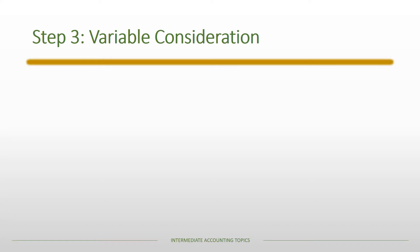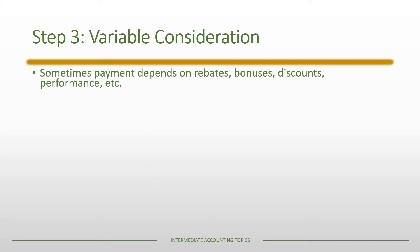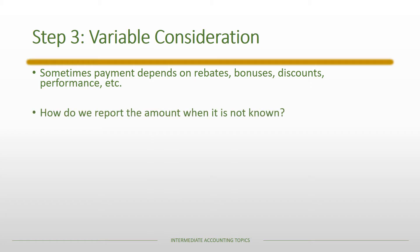Let's talk about variable consideration first. There are things that may create variation in the ultimate amount the customer is going to pay, and that determines the transaction price. It's just not known at the time of the transaction. If it's not known, we still need to record the revenue, but we have to figure out a way to account for this variable consideration. There are really two methods that are acceptable.